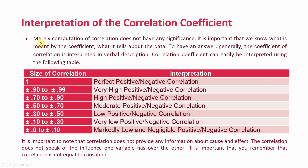Merely computing a correlation does not have significance — it is important to know what the coefficient means and what it tells us about the data. The correlation coefficient is interpreted using a verbal description table. If the coefficient is 1, there is a perfect positive or negative correlation. Between 0.90 and 0.99 means very high positive or negative correlation. Between 0.10 and 0.30 means very low positive or negative correlation. The R value tells you the strength of the relationship.